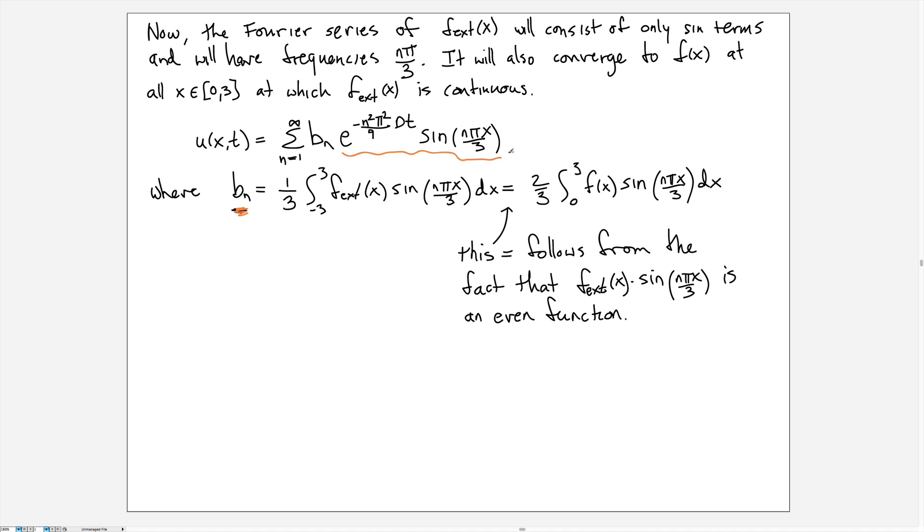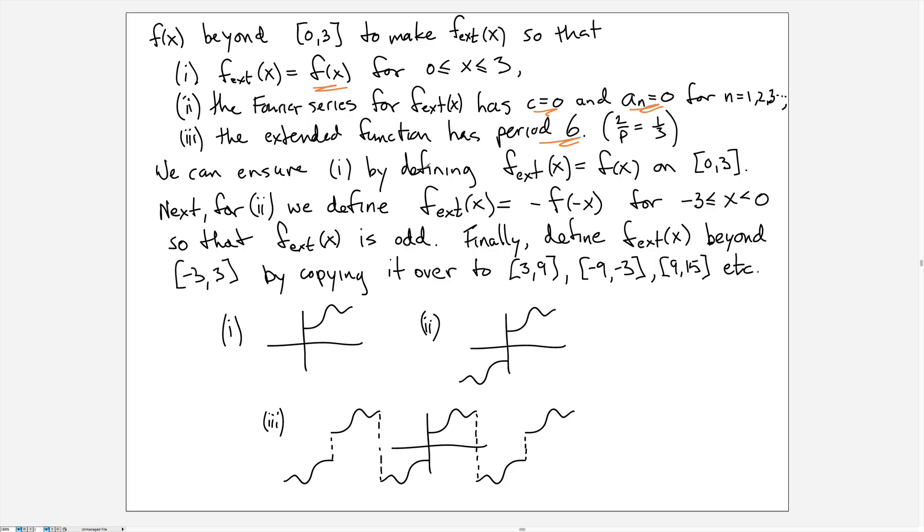So that takes care of the Dirichlet case. Now the Neumann case, if we had been given Neumann boundary conditions, everything through here would have been very similar except we want to keep the cosine terms instead of the sine terms. And so when we extend our function here, instead of extending it as an odd function, we'd extend it as even, but the rest of it all follows through in an analogous way.